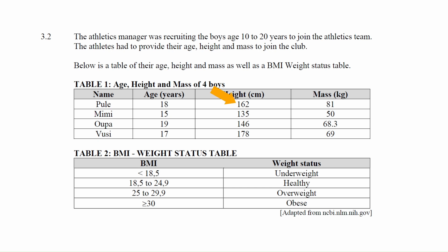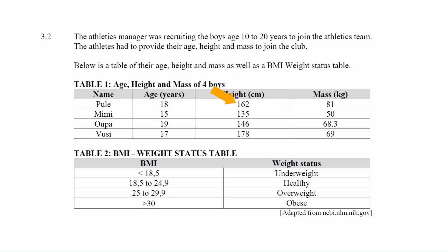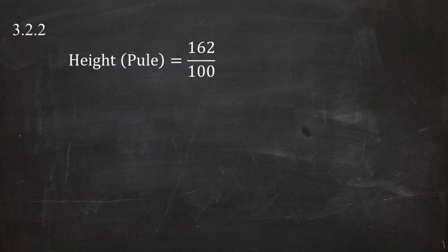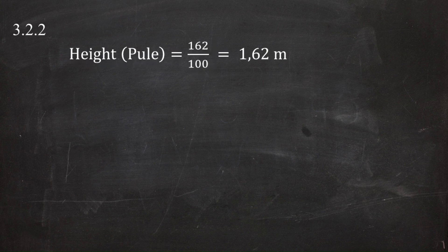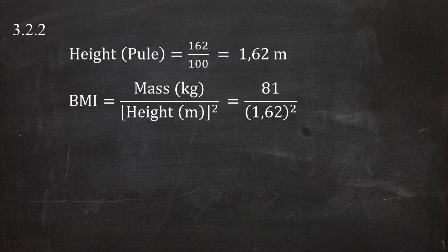Pule's height is given in centimeters and must be converted to meters: 162 cm ÷ 100 = 1.62 meters. Substituting his mass of 81 kg and height of 1.62 m into the BMI formula gives: BMI = 81 ÷ (1.62)² = 30.86419753 kg/m².